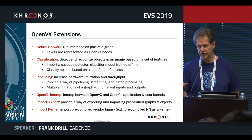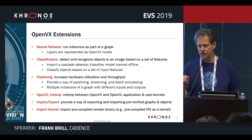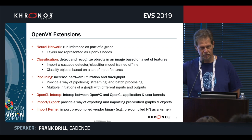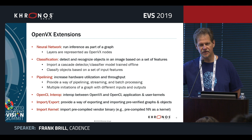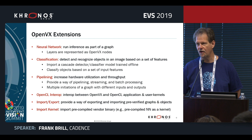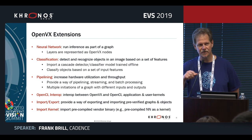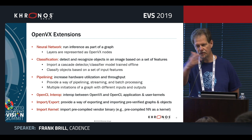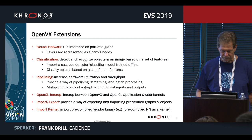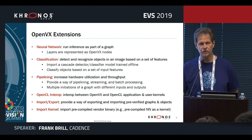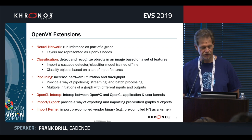There is a pipelining extension, which is important for multiple processors. If your graph is spread across multiple processors and you have a stream of images, you can start processing a second image before the first is finished, because you have enough hardware. Instead of waiting for the entire graph to complete before starting the next image, you push images in and they pipeline through. There is also an OpenCL extension for writing OpenCL code for parts of your algorithm not covered by standard OpenVX functionality.